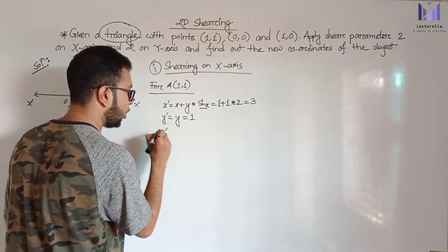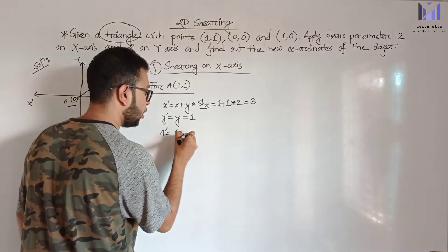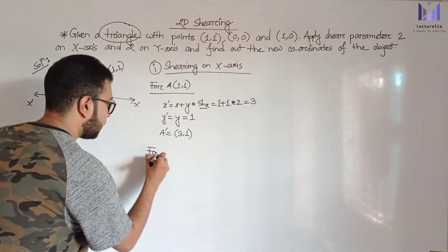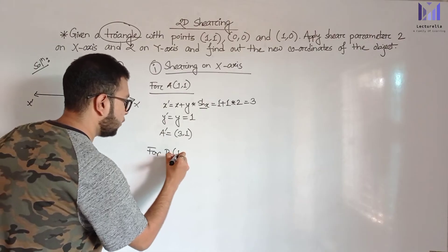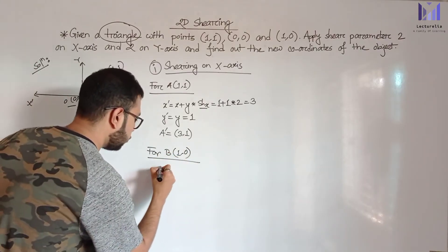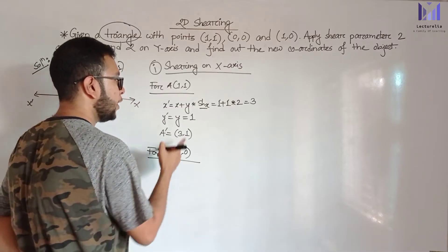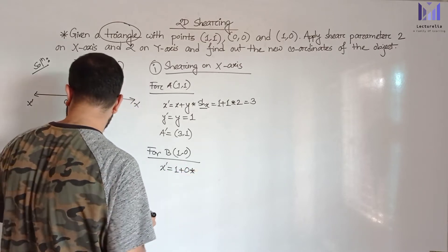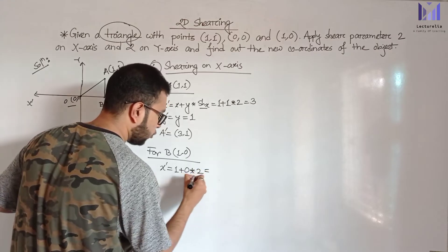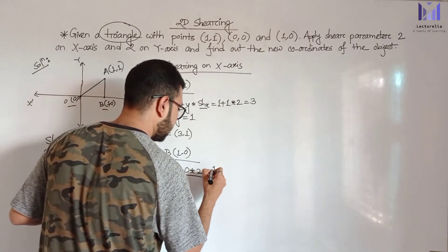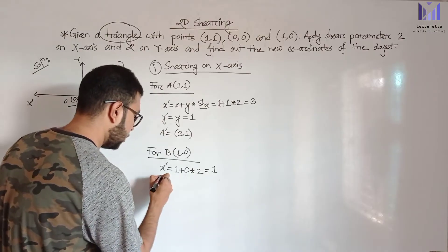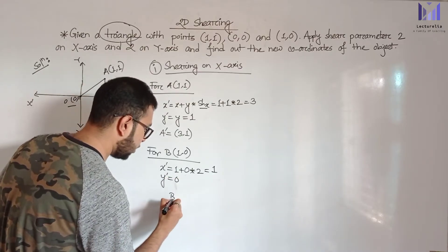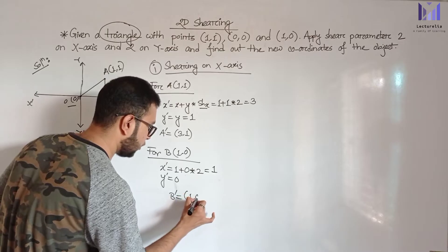So A prime is the point (3,1). Now for point B(1,0): X prime equals X plus Y into shX. X equals 1, Y equals 0, shearing parameter is 2. So X prime equals 1 plus 0 multiplied with 2 equals 1. Y prime equals Y which is 0. So B prime equals (1,0).